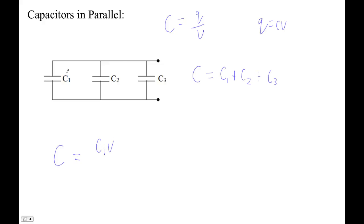They all have the same voltage across them because it's a parallel circuit. Plus C2v plus C3v, all divided by v. So the total capacitance would be the total charge divided by the voltage on there. Obviously, we can divide by v and just get C1 plus C2 plus C3.